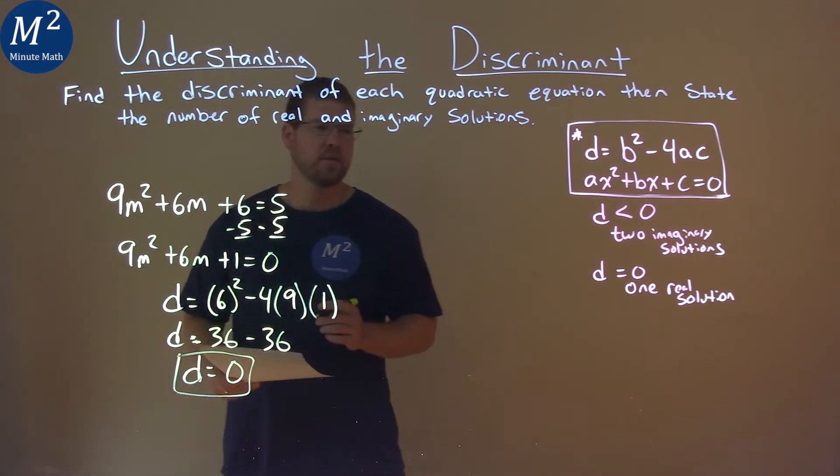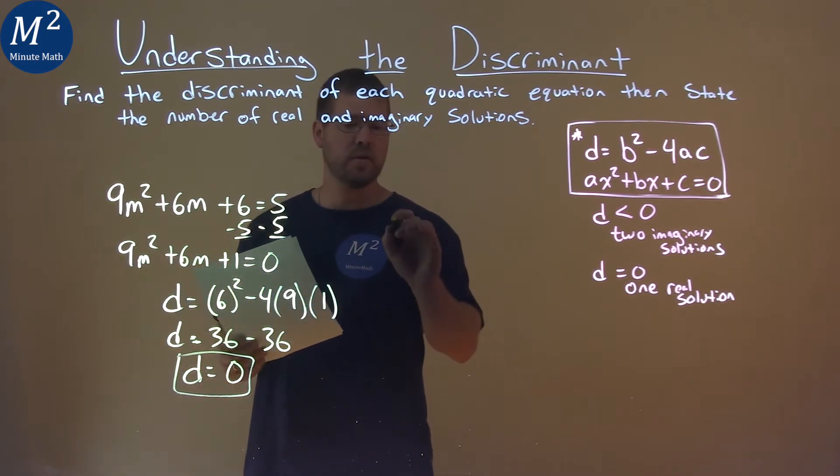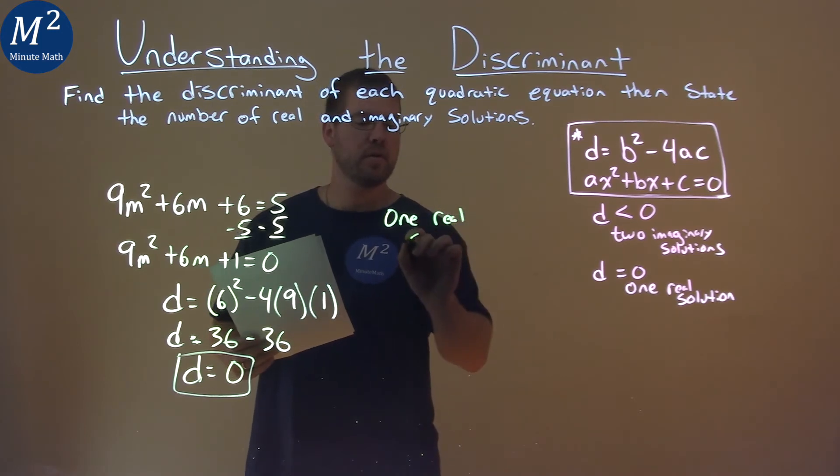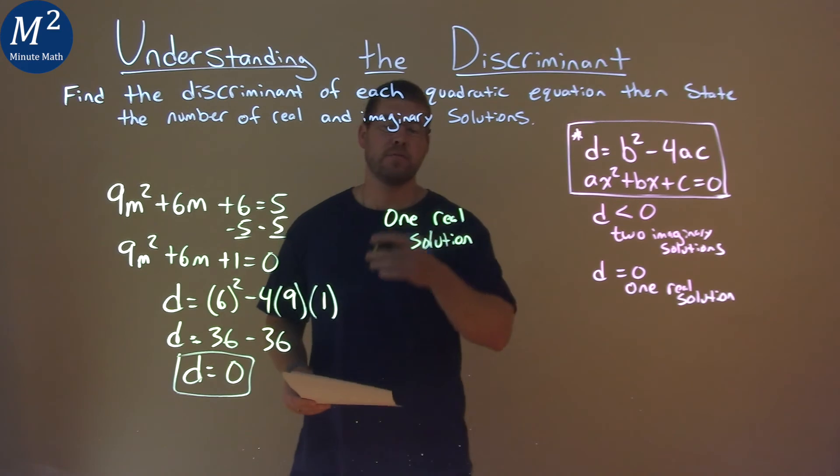So our discriminant here is equal to 0, and what does that tell us? Well, if our discriminant is equal to 0, we have only one real solution, and that is our final answer.